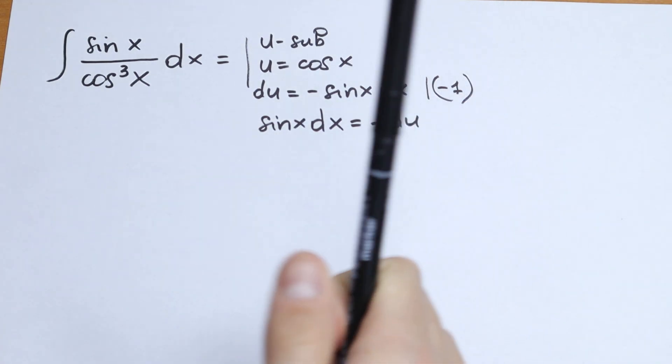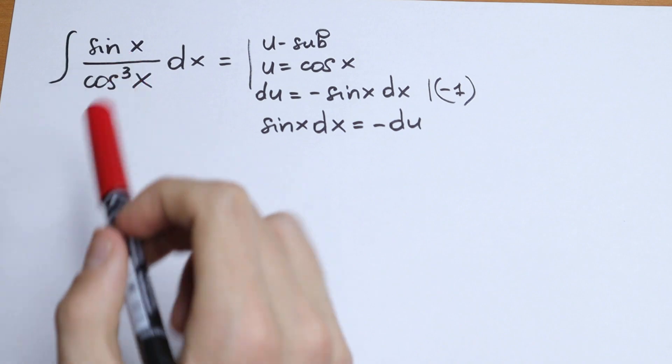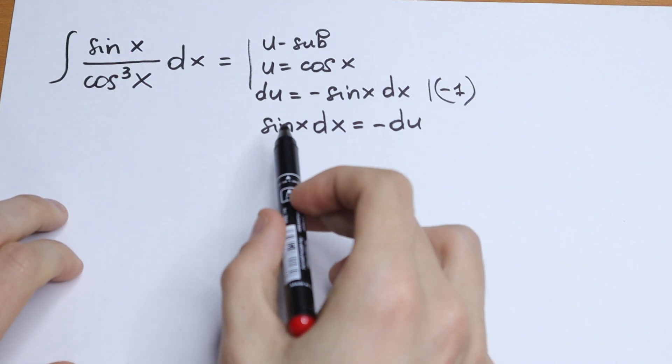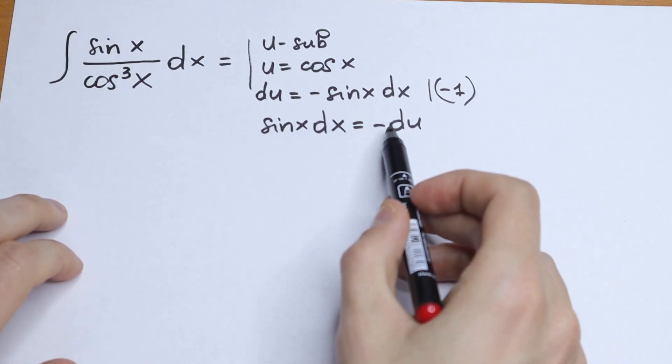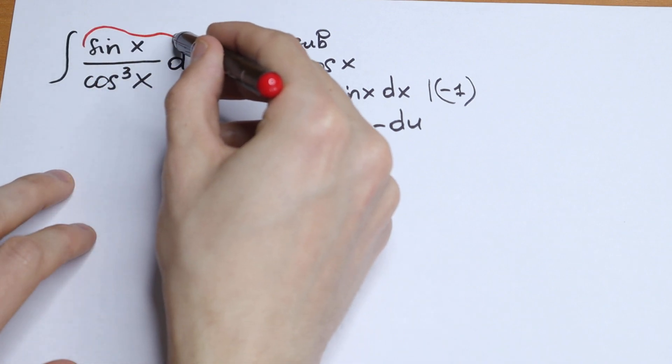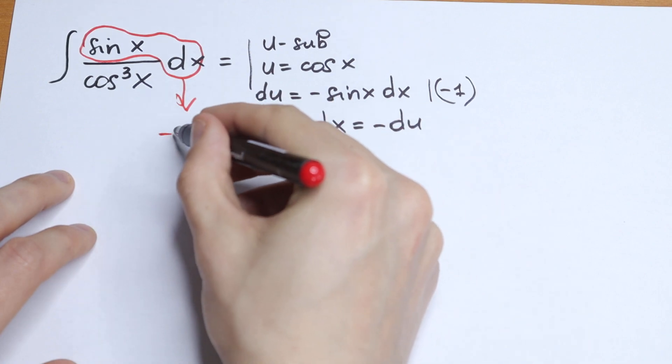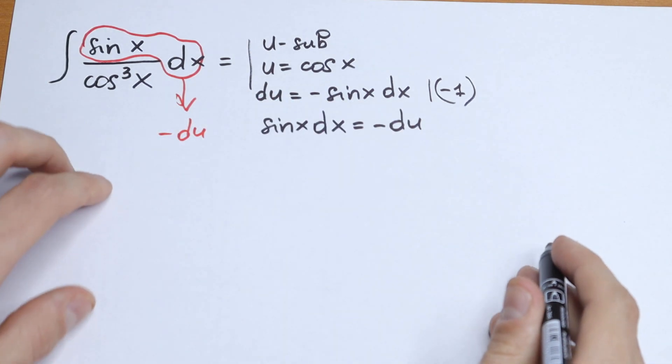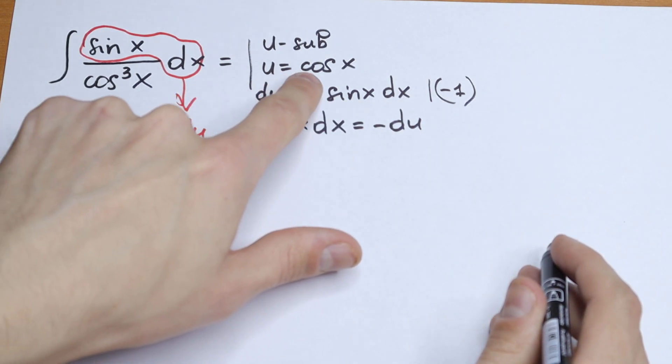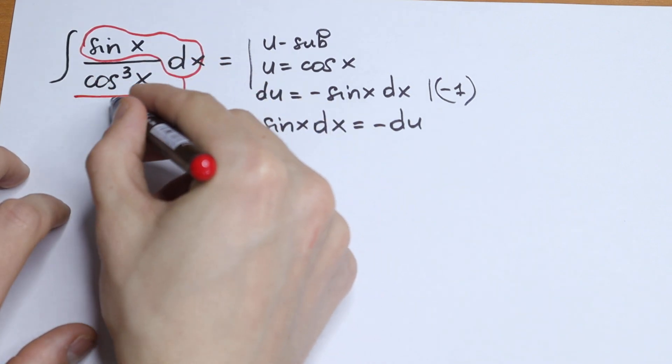And take a look. If we put all of these changes in our integral, we will have that sine x dx equals our du. So this sine x dx will be our minus du. And this cosine we change as u. So this is our u.